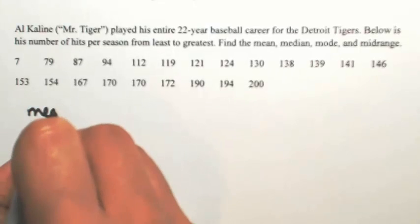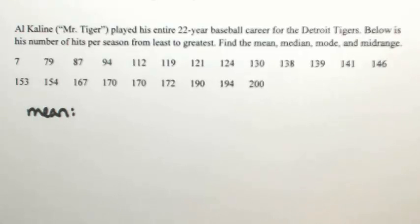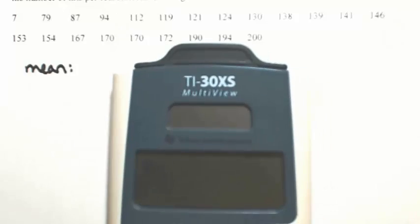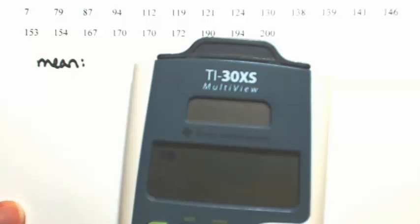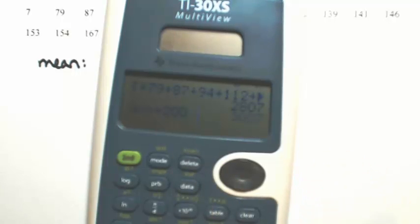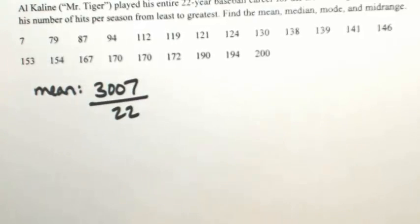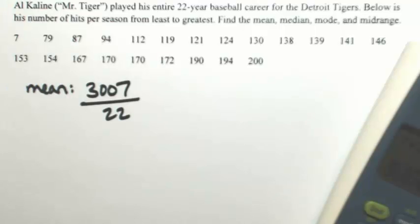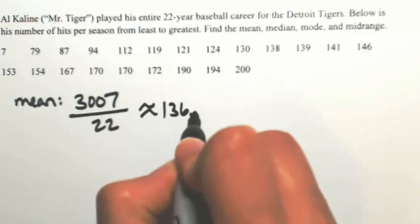Starting with the mean. First thing we're going to do is add all of these up and then divide by 22 years. I'm going to drop this into the calculator and add all of these up. So I get 3,007. Dividing that by 22, we're getting about 136.7 hits per season.